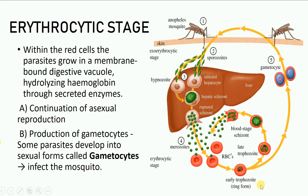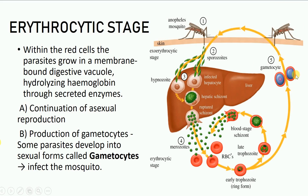Some of the early trophozoites, instead of developing into late trophozoites, develop into gametocytes, which are going to participate in sexual reproduction. The gametocytes do not undergo any change in the blood; they are sucked in by another Anopheles mosquito and travel into the gut of that mosquito. The gametocytes are the infectious stage of the parasite for the mosquito.